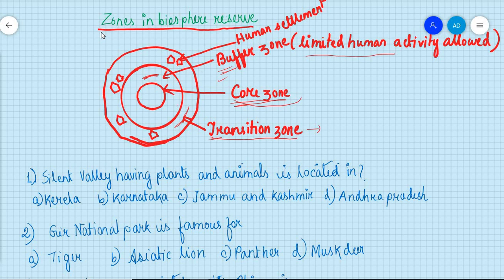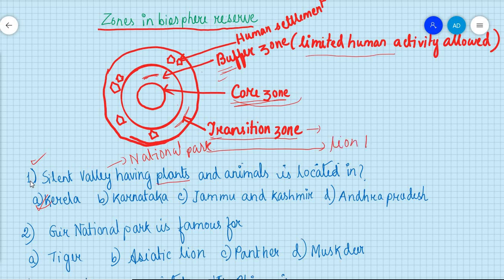Now we will discuss a few questions related to biodiversity conservation. The first question: Silent Valley National Park, having rich plant and animal life, is located in — Silent Valley is a national park located in Kerala, and it is famous for the lion-tailed macaque. The next question: Gir National Park is famous for — Gir National Park is situated in Gujarat and is famous for the Asiatic lion.